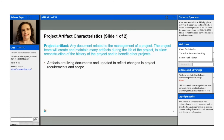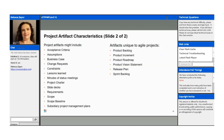Project artifacts can include, but are not limited to: acceptance criteria, assumptions, business case, change requests, documented constraints, lessons learned, minutes of status meetings, your project charter, slide decks — essentially anything that you create for the project that is a document is going to be considered an artifact.